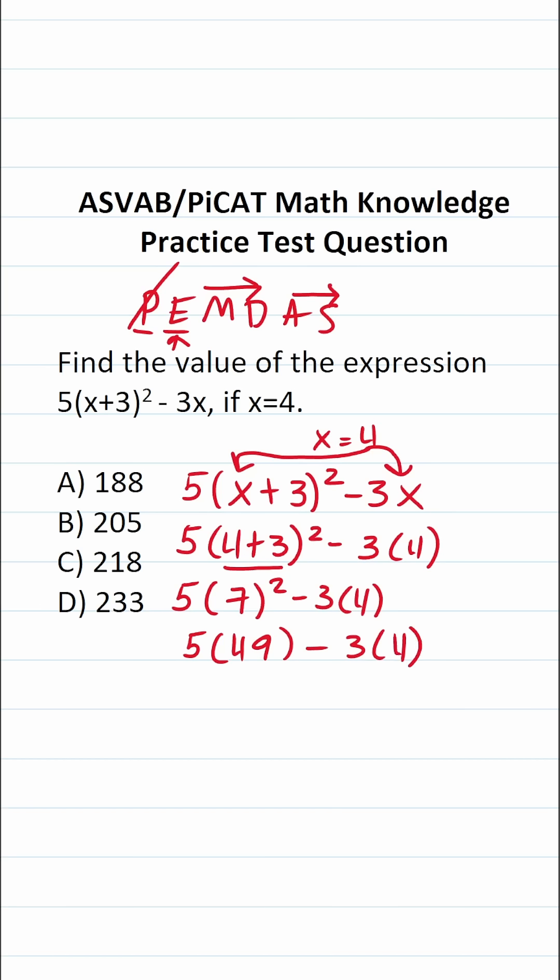Now if we look at this expression what do we have left? We have 5 times 49 which is multiplication. We have subtraction here and then we have 3 times 4 which is multiplication. So we're going to work out our multiplication as it appears in the expression from left to right.